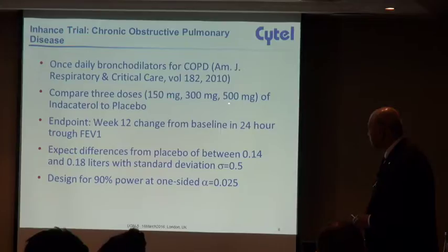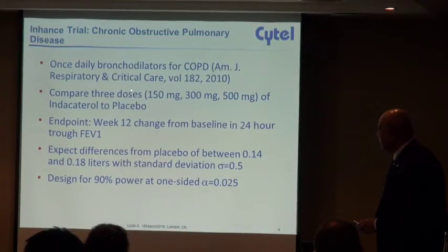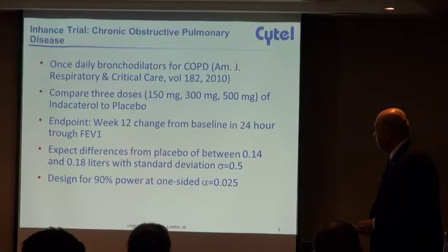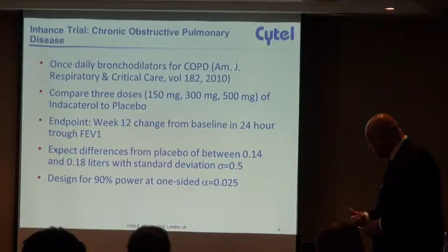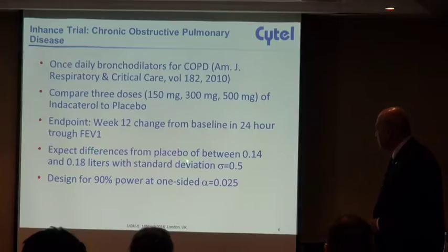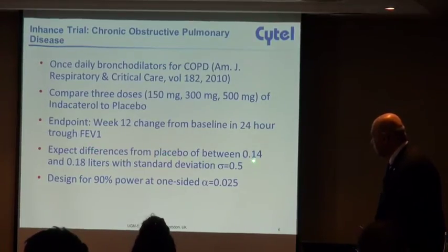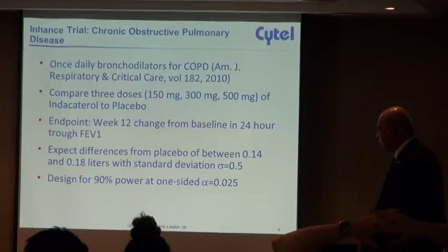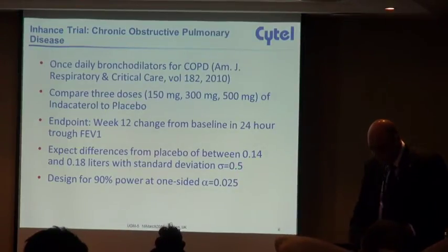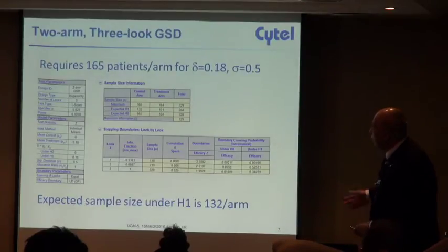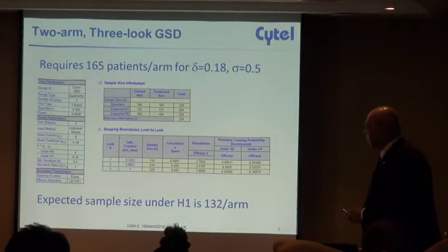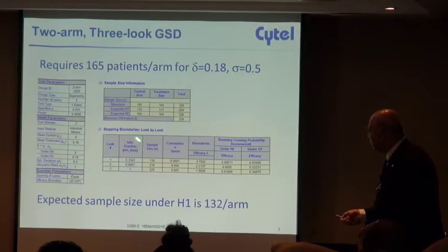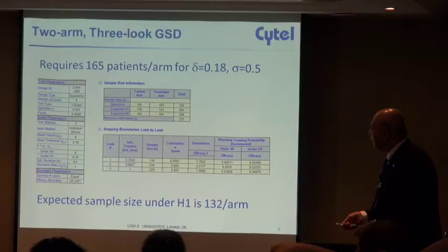Here is a study with four arms: three doses and placebo. It's a COPD trial. The primary endpoint is the V12 change from baseline in the FEV1. The expected differences from placebo, so there's going to be three comparisons with placebo, and the expected differences are between 0.14 and 0.18 liters with a sigma of 0.5. Let's say we want to design this for 90% power at a one-sided alpha of 0.025.